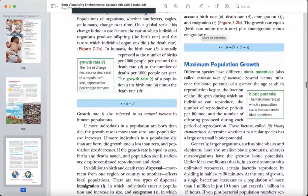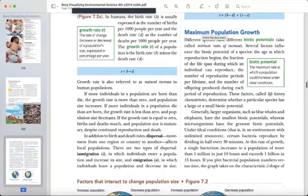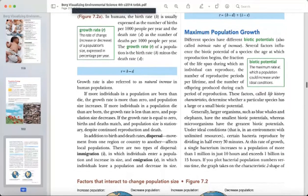Different species have different biotic potentials, also called intrinsic rates of increase. Several factors influence the biotic potential of a species: the age at which reproduction begins, the fraction of the lifespan during which an individual can reproduce, the number of reproductive periods per lifetime, and the number of offspring produced during each period of reproduction.